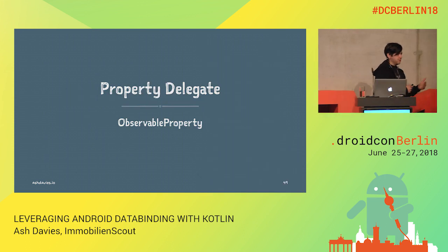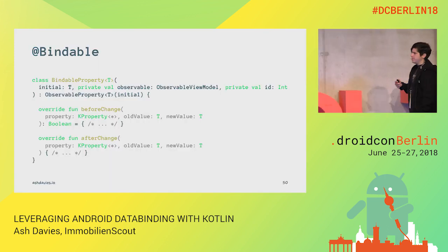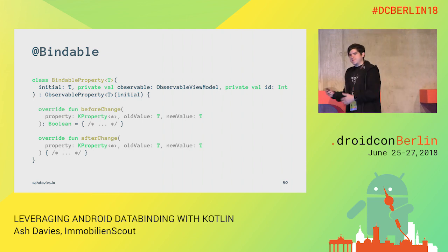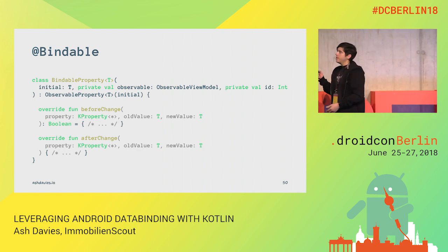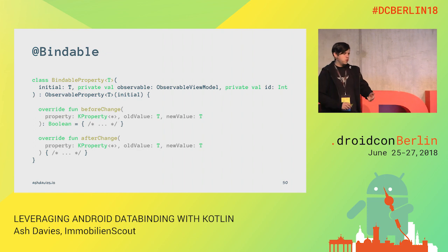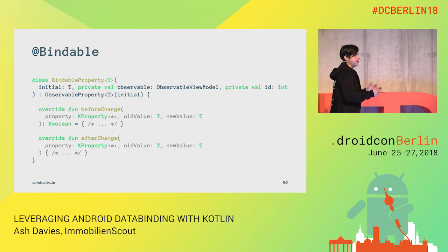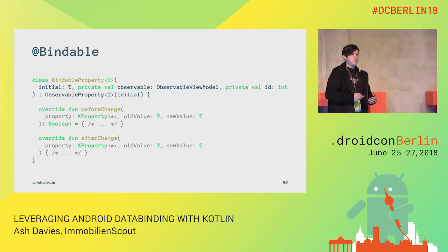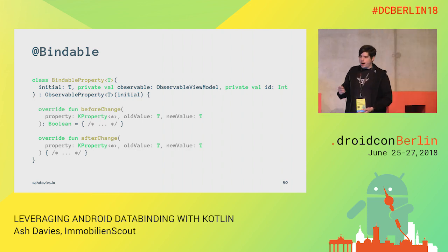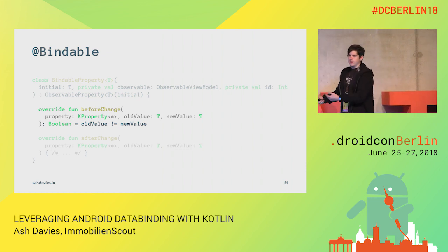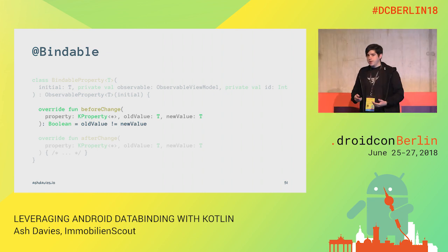We extend Kotlin's ObservableProperty so we can listen for changes on this class and react accordingly before and after the property changes. This observable property overrides two functions: beforeChange and afterChange. beforeChange takes a Boolean response to indicate whether we approve of this change. We can say we only want to change this if the old value does not equal the new value — meaning we're not unnecessarily notifying data binding of changes. If you're using two-way binding, this means you can prevent infinite loops.